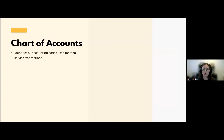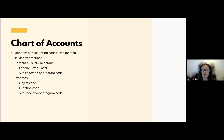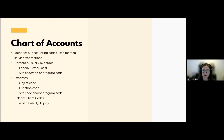Documentation supporting a separate nonprofit school food service chart of accounts — the big one is a chart of accounts that identifies all accounting codes used for food service transactions. Revenues are usually organized by source: federal, state, and local. Depending on the size of your SFA, you may have site codes or program codes to break up revenues further. Expenses are usually broken up by object code, function code, site code, or program code. It also includes balance sheet codes: asset, liability, and equity. At the bare minimum, you must be able to provide a chart of accounts showing revenue and expense codes that are discrete for the food service program.